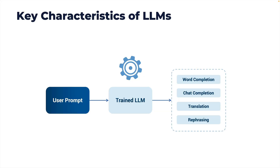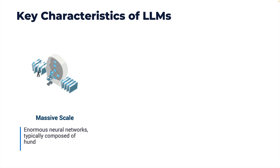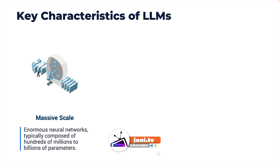Having seen what LLMs are capable of, let's look at the key characteristics that differentiate LLMs from other foundation models. LLMs are large — that's why they are called large language models. They are based on enormous neural networks typically composed of hundreds of millions to billions of parameters. Parameters directly translate to the memory units that make the LLM capable of bringing context and connecting the meaning of words in a sentence or phrase.